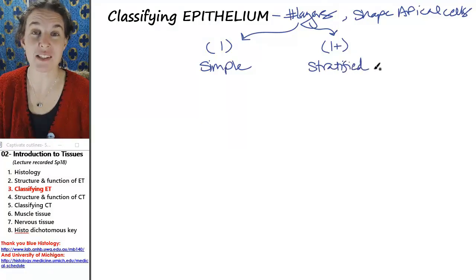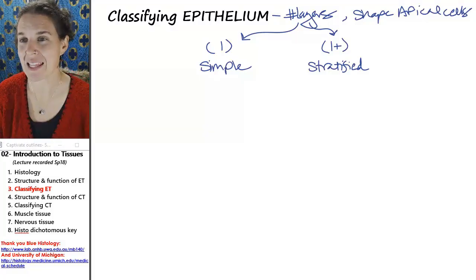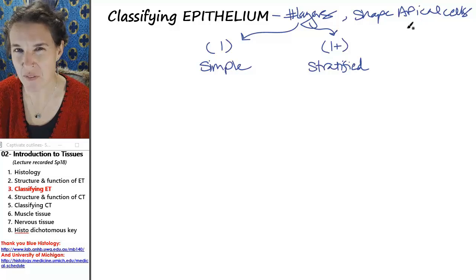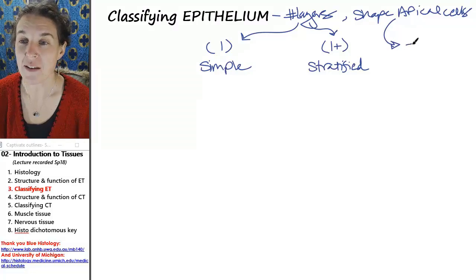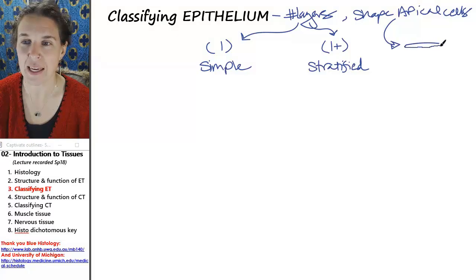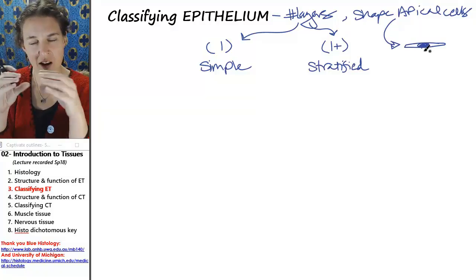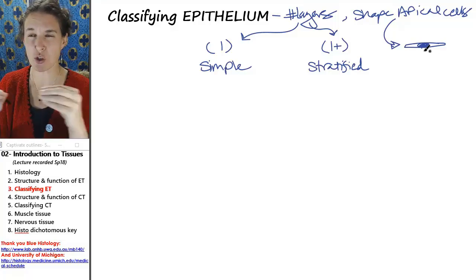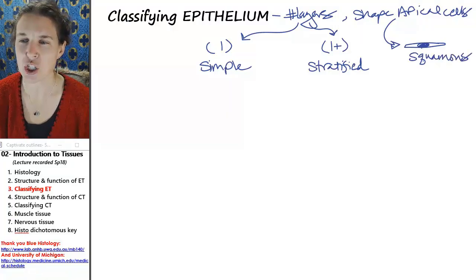Epithelium can be simple or stratified. We combine that with the shape of the apical cells, and we have three options for our shapes. We can have super flat cells, almost like little pancake cells or fried egg cells. If they're flat and even the nucleus gets kind of flat, that's called a squamous-shaped cell.